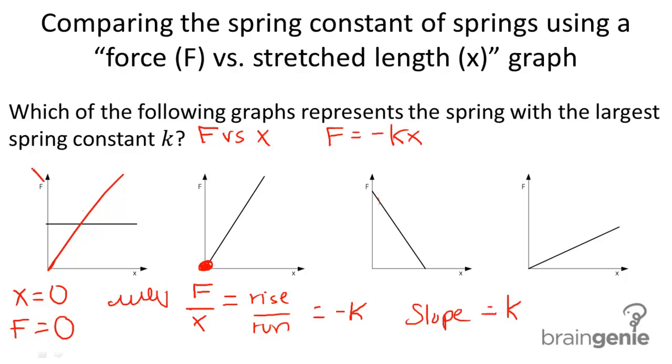So therefore, right off the bat, you know that this and this graph have to be incorrect because they don't start at the origin.